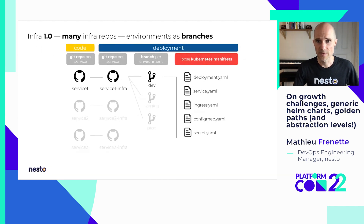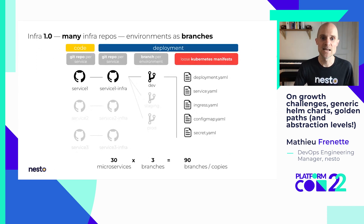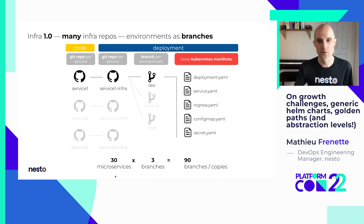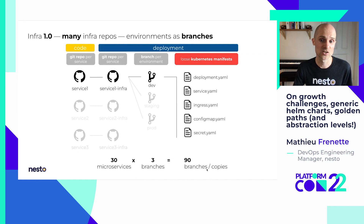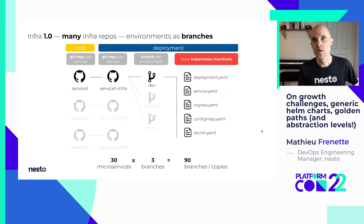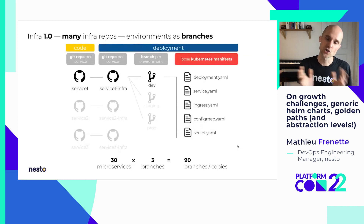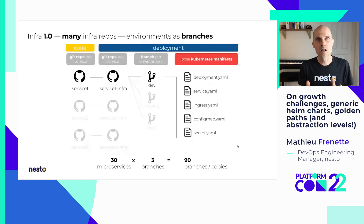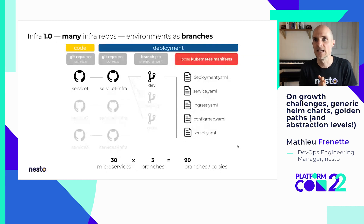However, that rapidly grew into many more microservices. Just do the count: 30 microservices times three branches — that means 90 branches or copies of all those files that were pretty much all very similar in terms of structure and functionality, yet all somehow unique in the way they were configured and tweaked.